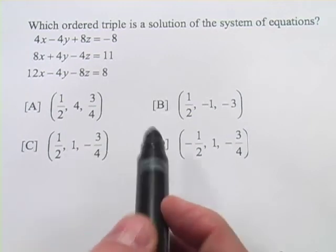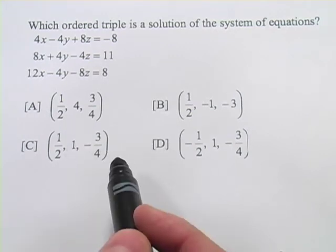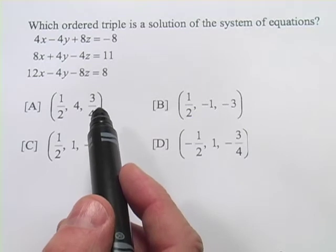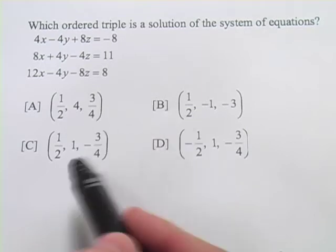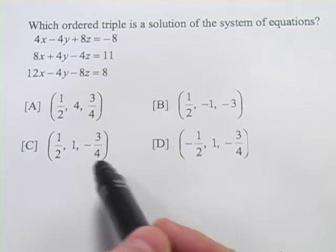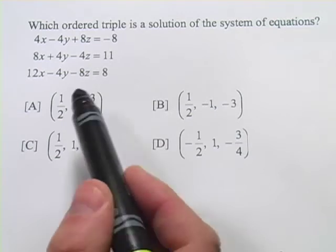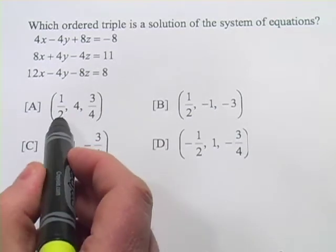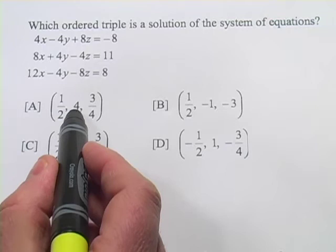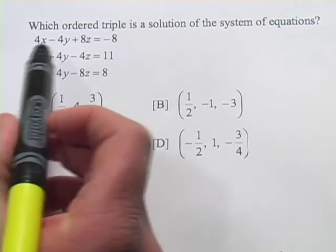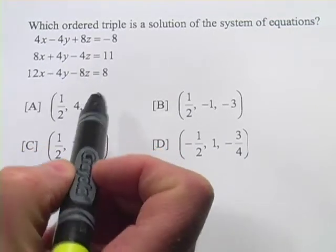In these problems, we're being asked to determine if an ordered triple is a solution to a system of three equations. And since they're giving us these choices here, probably the easiest way to figure this out is to just try to plug them in. The first number in each of these triples is x, then y, then z.